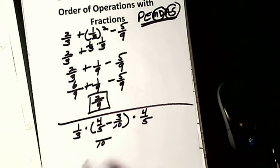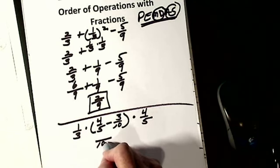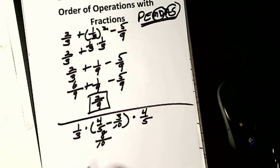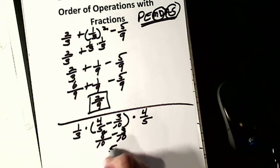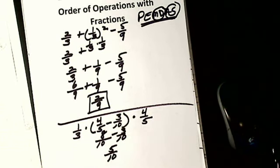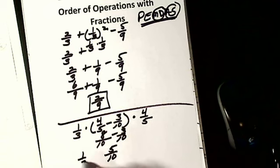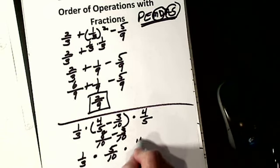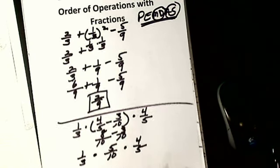The common denominator is tenths. I multiply five by two to get ten, so four-fifths becomes eight-tenths. Eight-tenths minus three-tenths gives me five-tenths. I could simplify to one-half at this point, but I'll keep it as five-tenths. Now I have one-third times five-tenths times four-fifths — all multiplication.